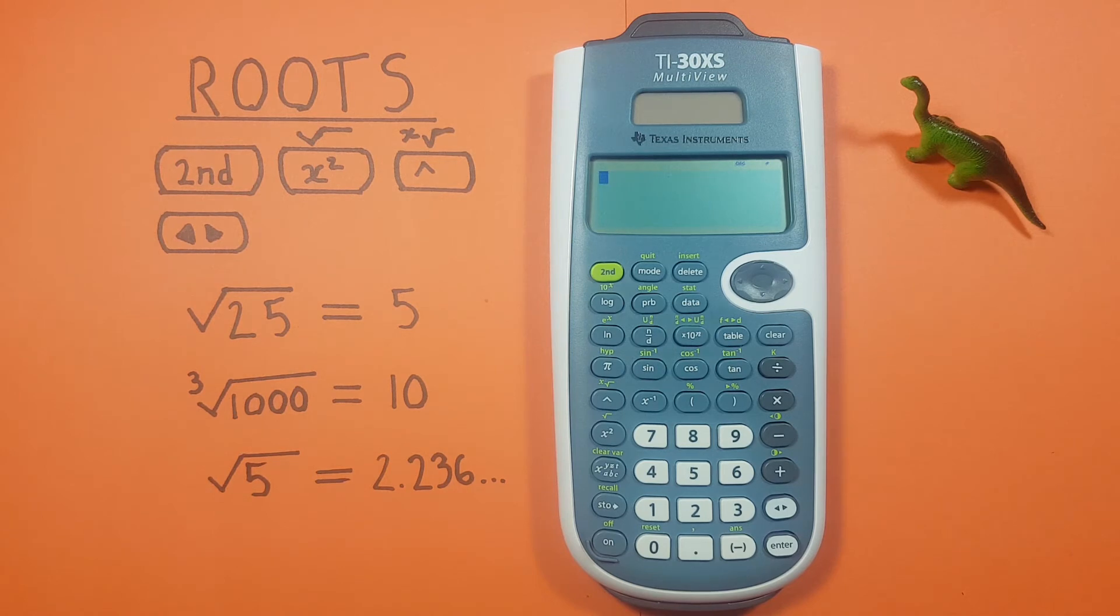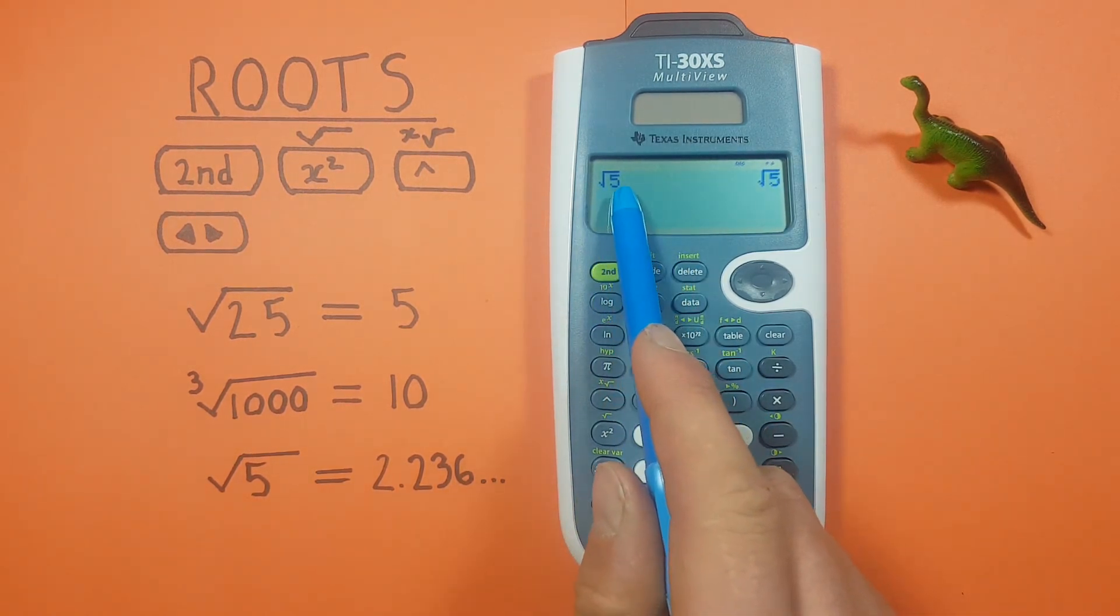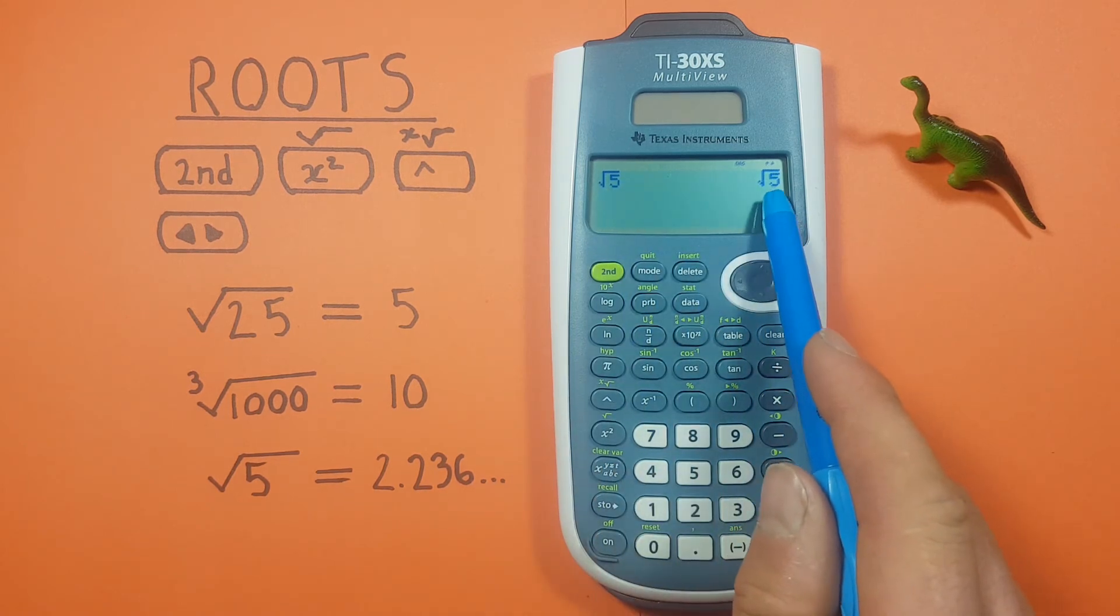Now you might encounter some cases where you don't get a clean answer, like say we want to find the square root of 5. There's our square root 5. We press enter and this calculator gives us square root of 5 as the square root of 5.